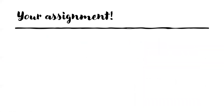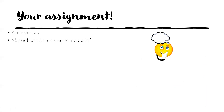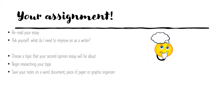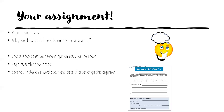Here's your assignment today. First, reread your opinion essay that you turned in. Ask yourself: what do I need to improve on as a writer? Think about all the things we talked about today. Did you do any of those things? Once you've identified what you need to improve on, choose a topic for your second opinion essay — I know for my class we jotted down three ideas, so choose one. Then begin researching your topic. Save your notes on a Word document, piece of paper, or graphic organizer, and save the websites you use because those go into your bibliography.